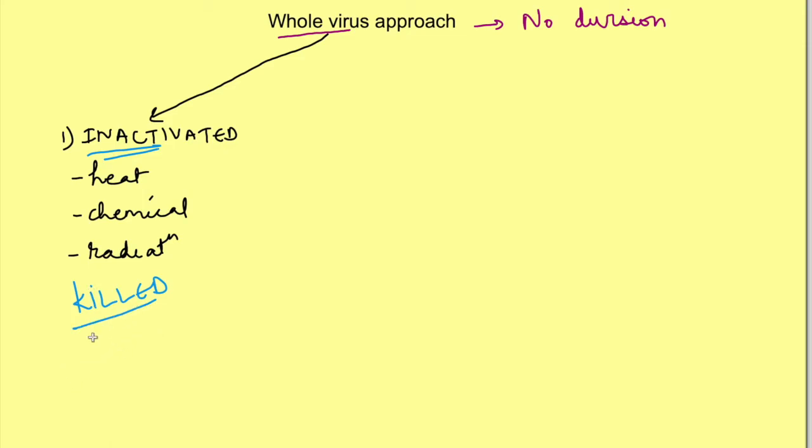Since this is a killed virus these do not cause an infection but an immune response is generated against the proteins. The Covaxin which is being used in India is a whole killed virion. Then another vaccine developed by China by Sinopharm which has recently been given approval by WHO for emergency use is also a killed whole virus vaccine.